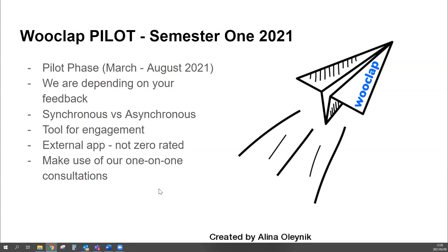WooClap is a tool designed for engagement, as opposed to formal assessment. If you want more rigorous assessments, use the native tools in Vula — tests and quizzes rather than WooClap. But for engagement, it really is a great tool. It is also an external app, which means it's not zero-rated. Students should have a data allocation provided by the university, but check with your students to make sure you're not excluding anyone by using non-zero-rated apps.